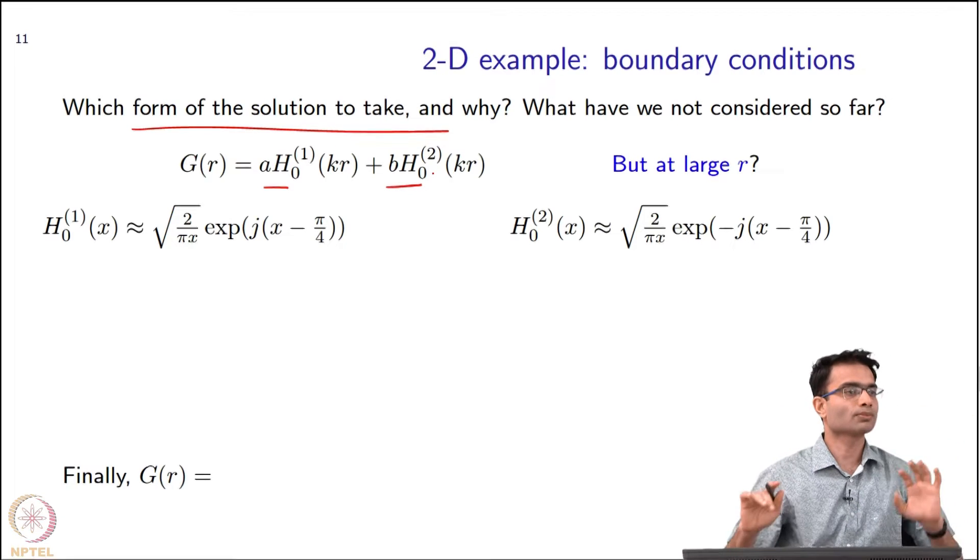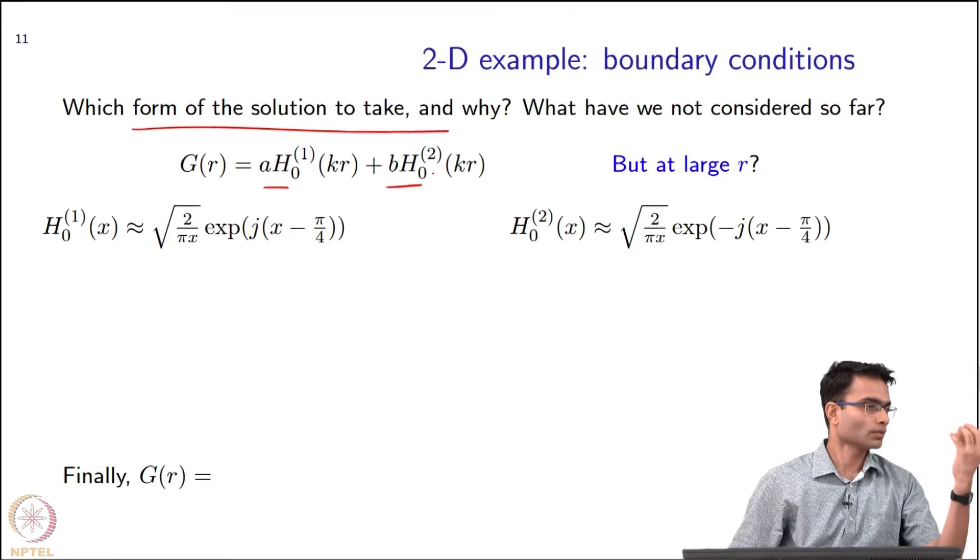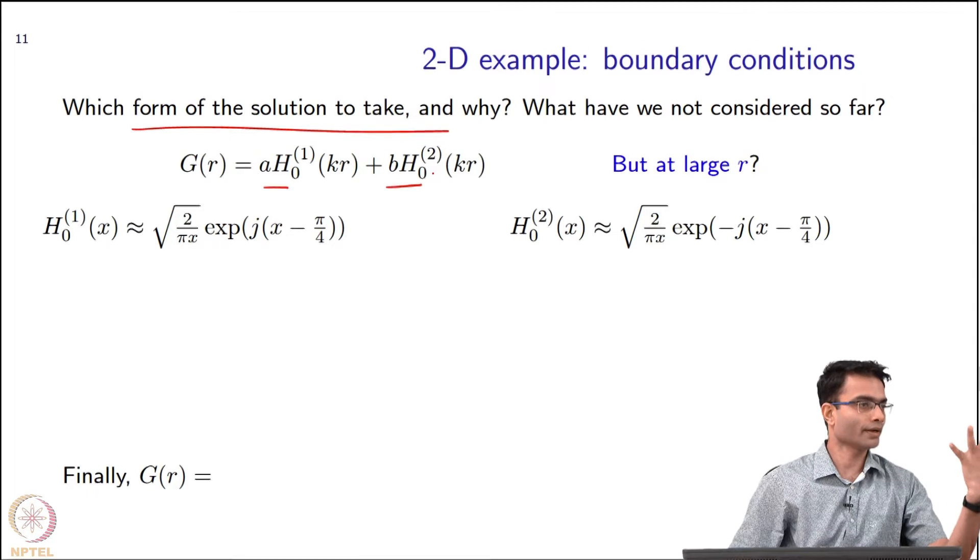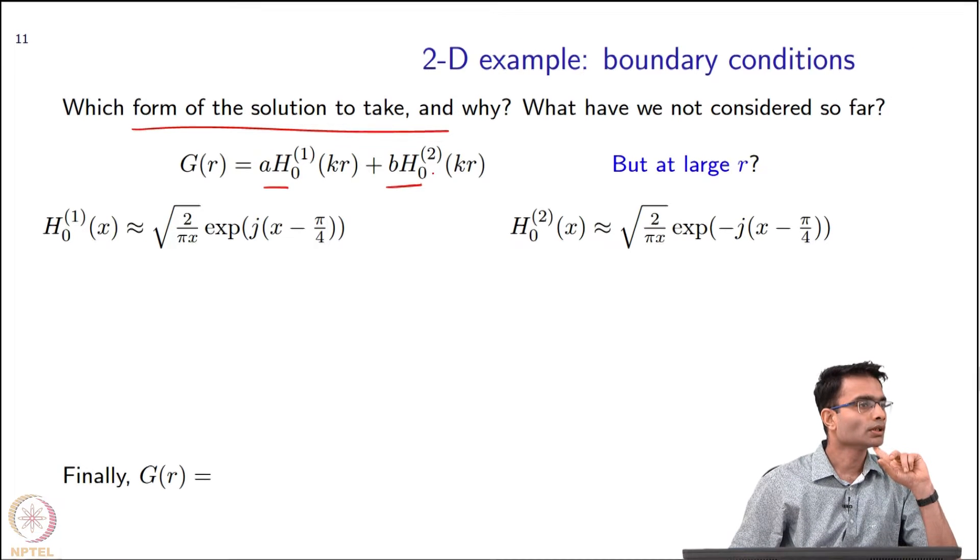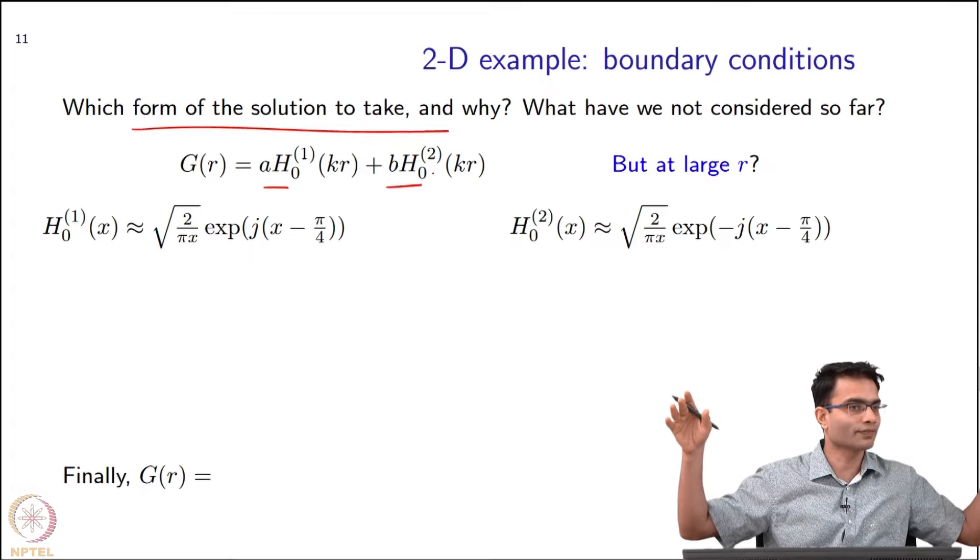Forget what is on the board - what are the boundary conditions for this problem? I have a point source sitting at the origin radiating a field. As the field goes far away, I mean as I go far away, the field should go to zero.